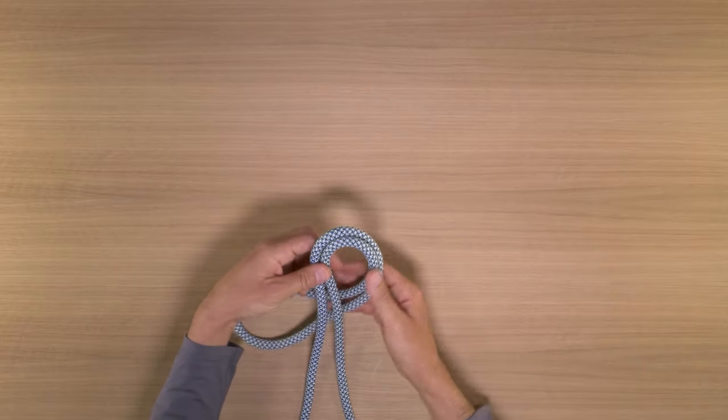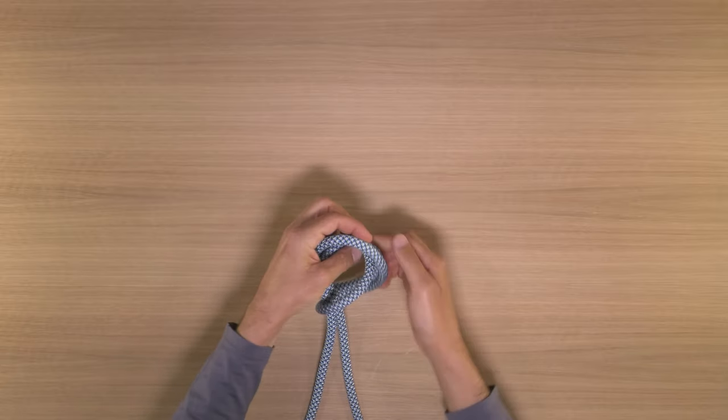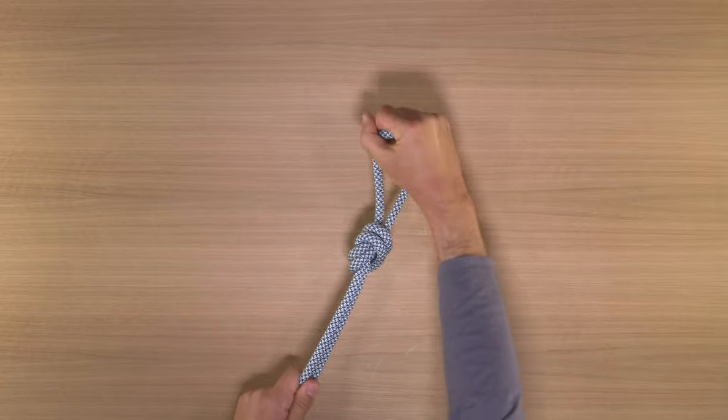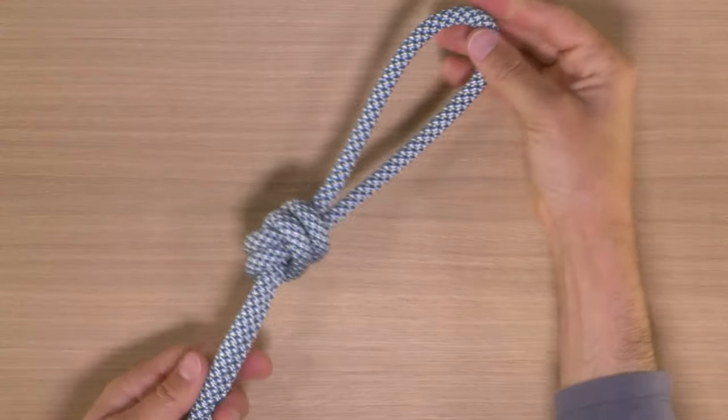To tie an overhand knot on a bight, you take the end of the bight, pass it around the back of the rope, and pull it through the loop. Dress it neatly, and you are good to go.